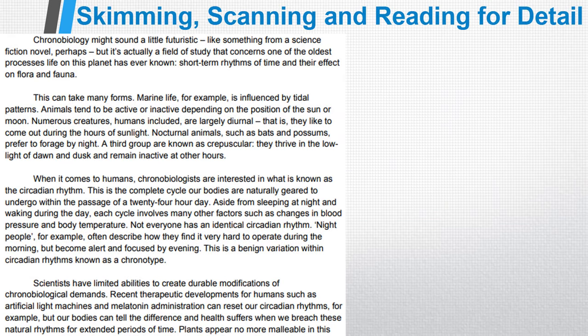Now it's really important that you understand the difference between skimming, scanning and reading for detail and how to do those skills correctly. I'm going to show you now using a text from a previous exam paper. There are four paragraphs in this section that I've selected, and first we're going to skim through it to get a general idea of the text and where different information is located. To do that we're going to read the topic sentences of each paragraph.